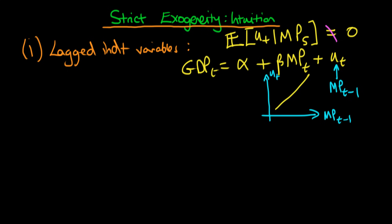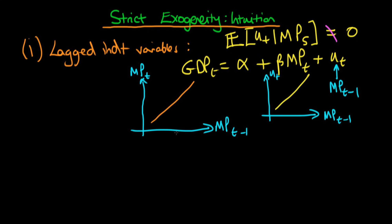What's the intuition as to why there is this bias? We expect that monetary policy is quite correlated with itself across time — monetary policy at time t is highly correlated with monetary policy at period t minus one. Because we haven't included this important variable in our regression, monetary policy at time t is essentially taking some of the credit away from monetary policy at period t minus one. So the OLS estimate beta hat will on average be greater than the true parameter beta.